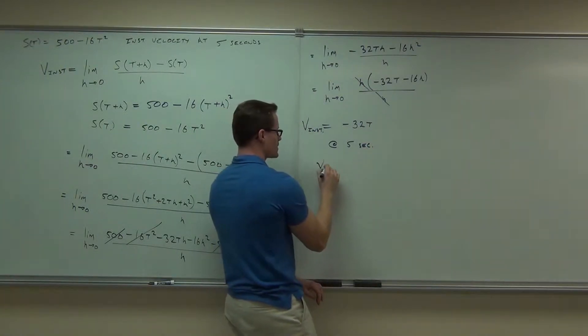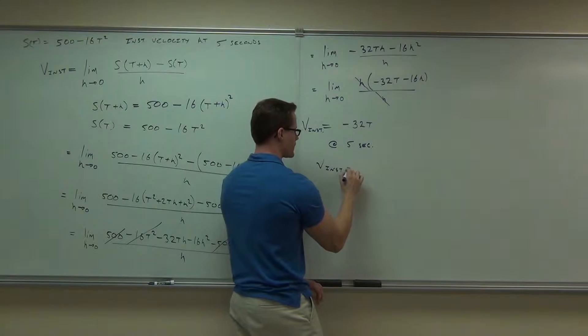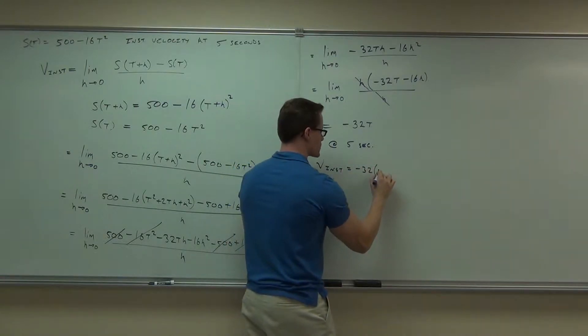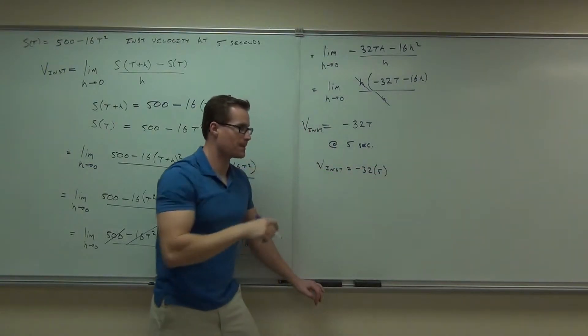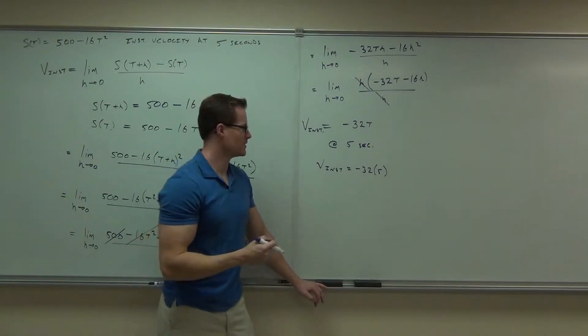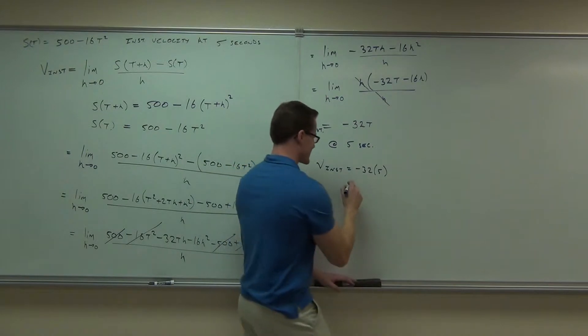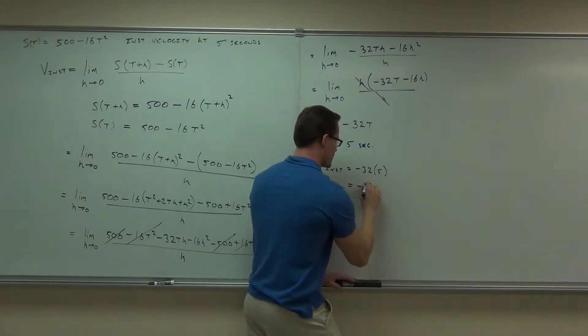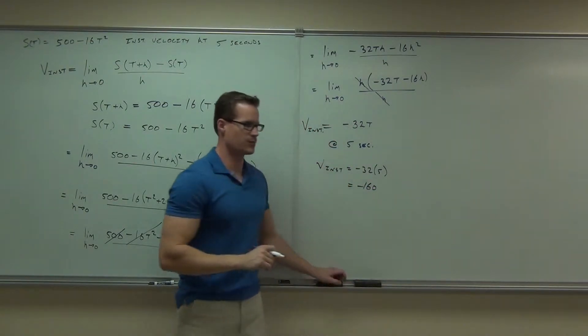At five seconds, the velocity would be negative 32 times 5. Is that what we had before? Yeah, negative. Stressful. Stressful job I have here. Negative 160, again, feet per second.